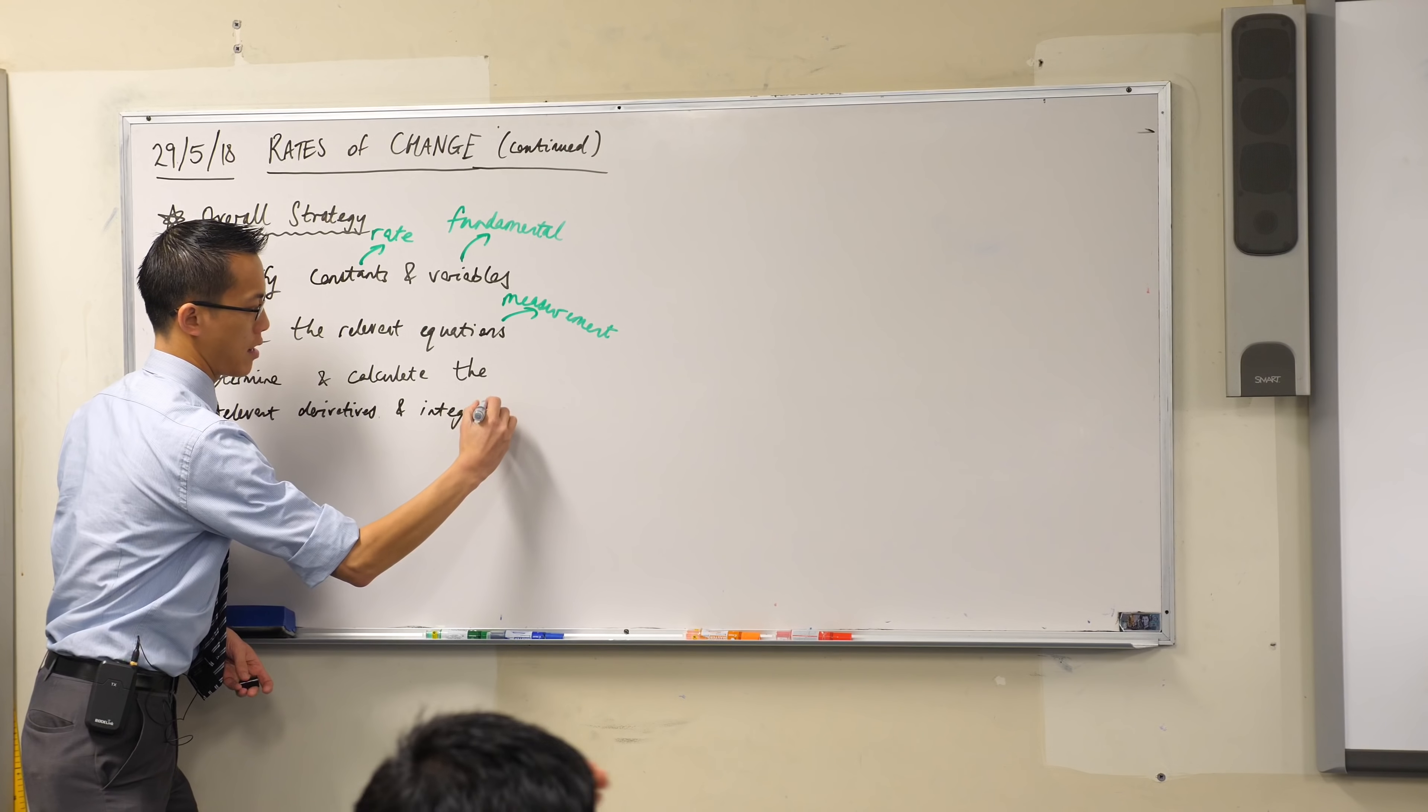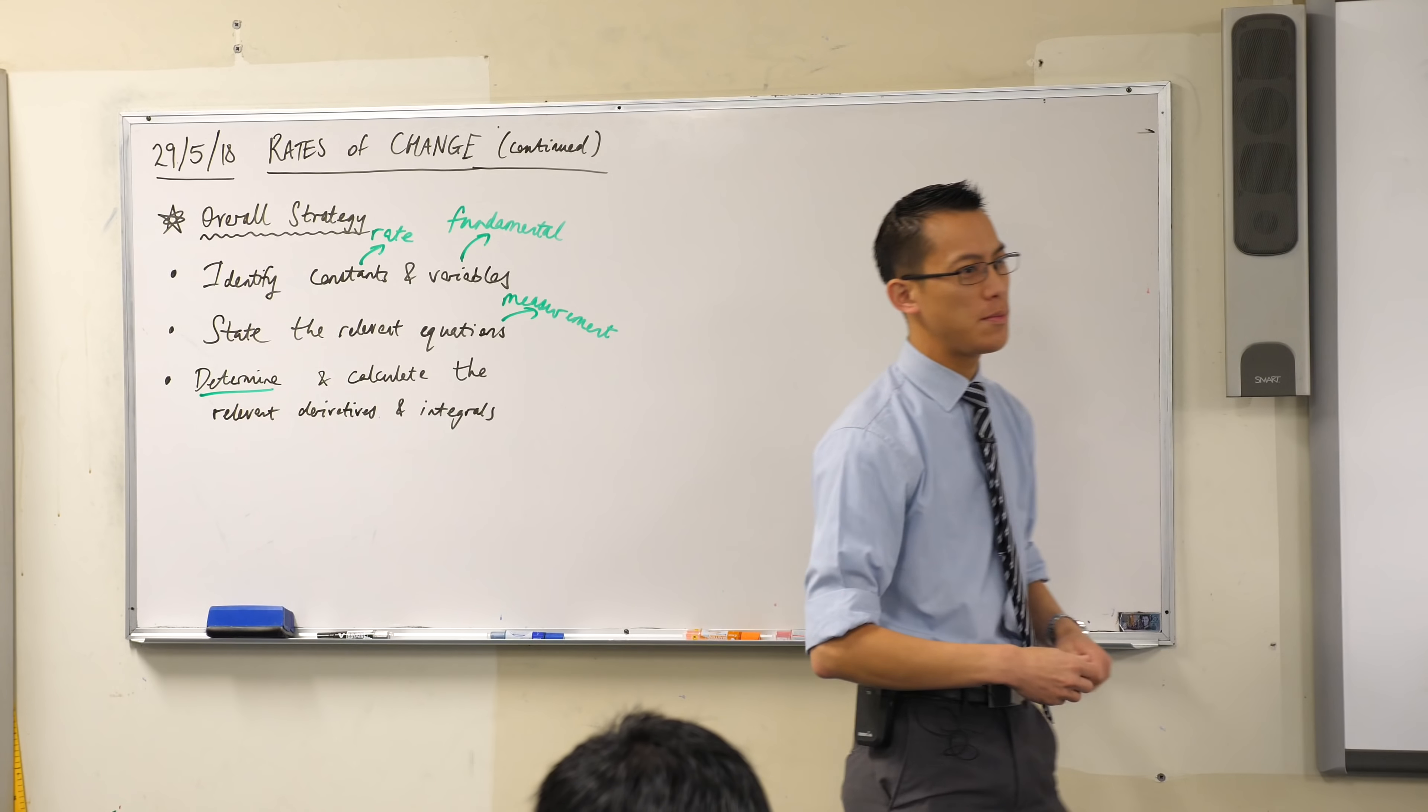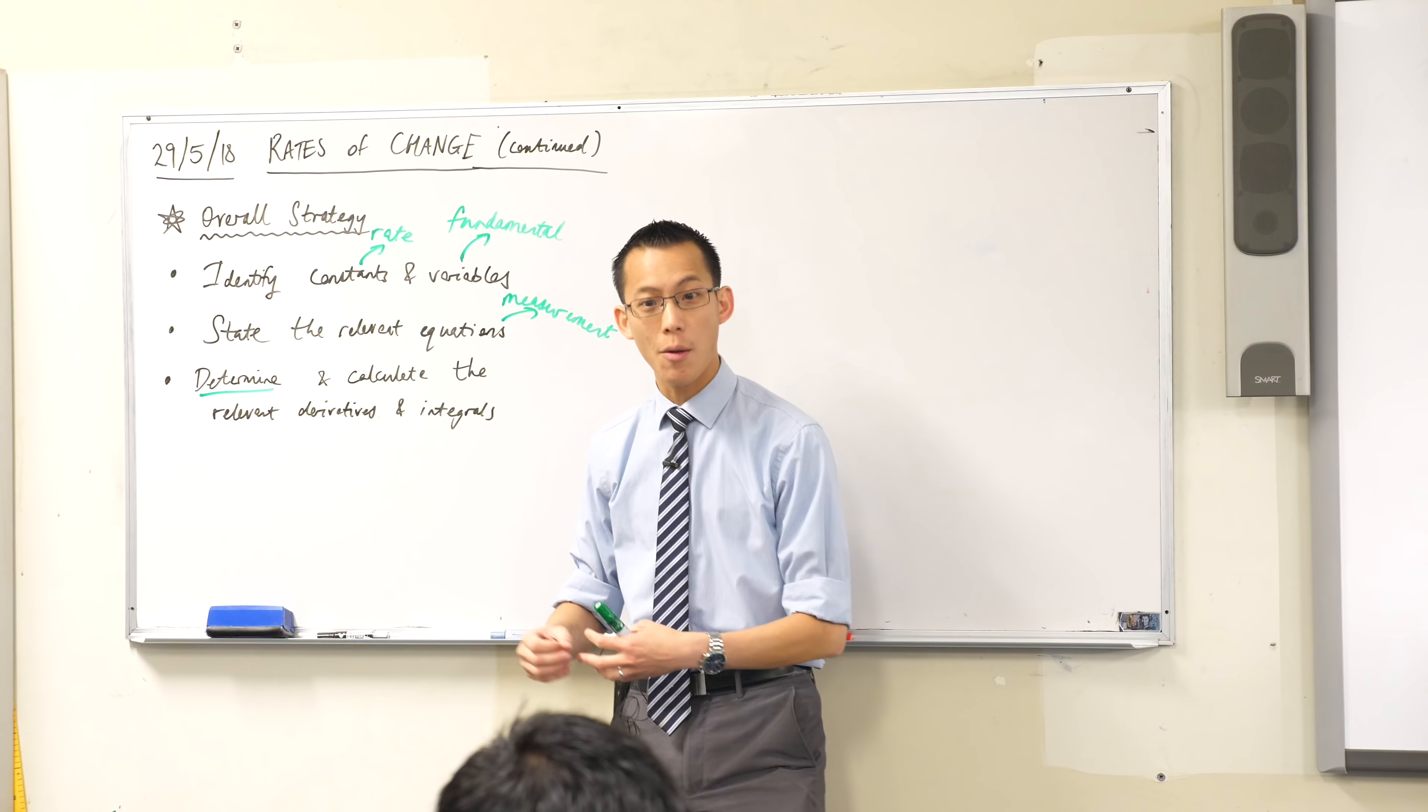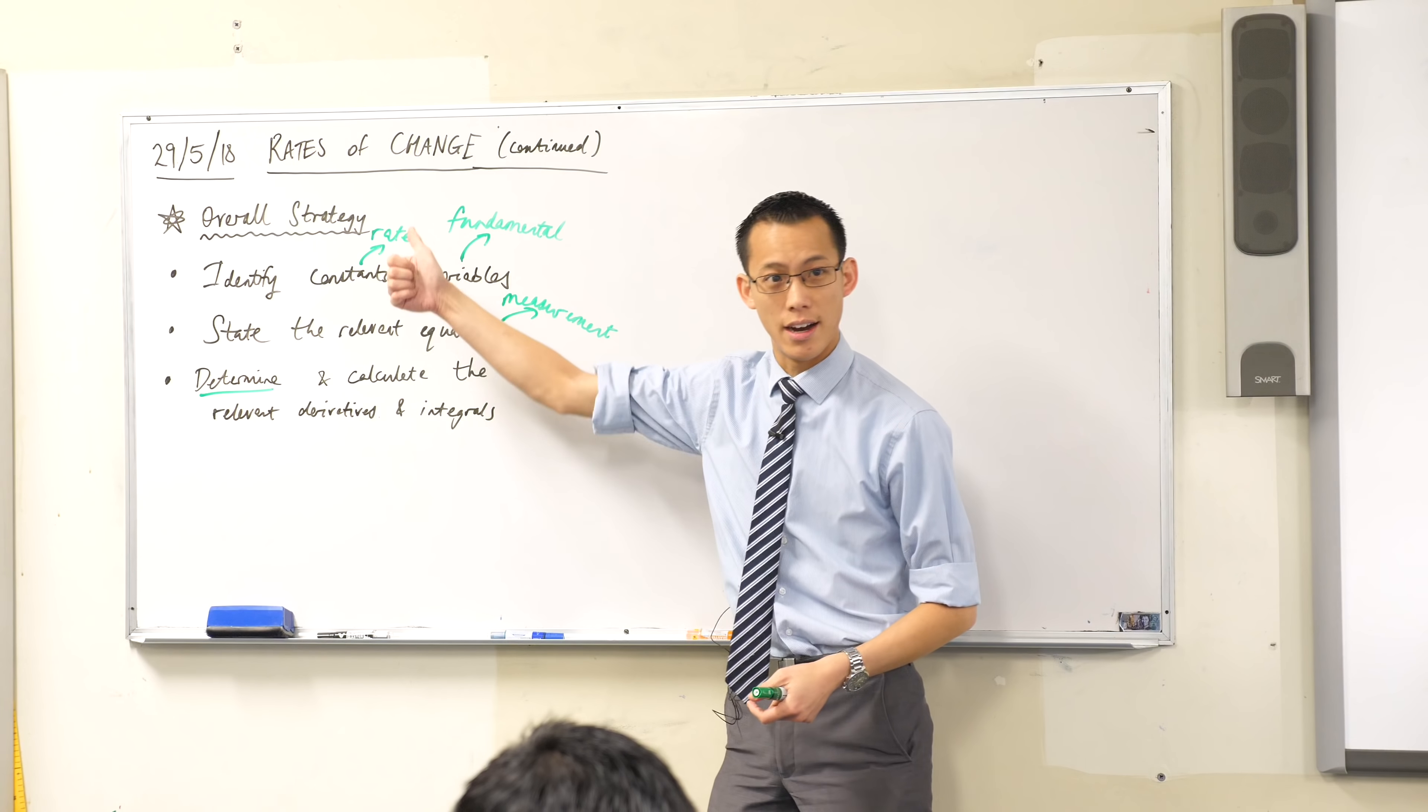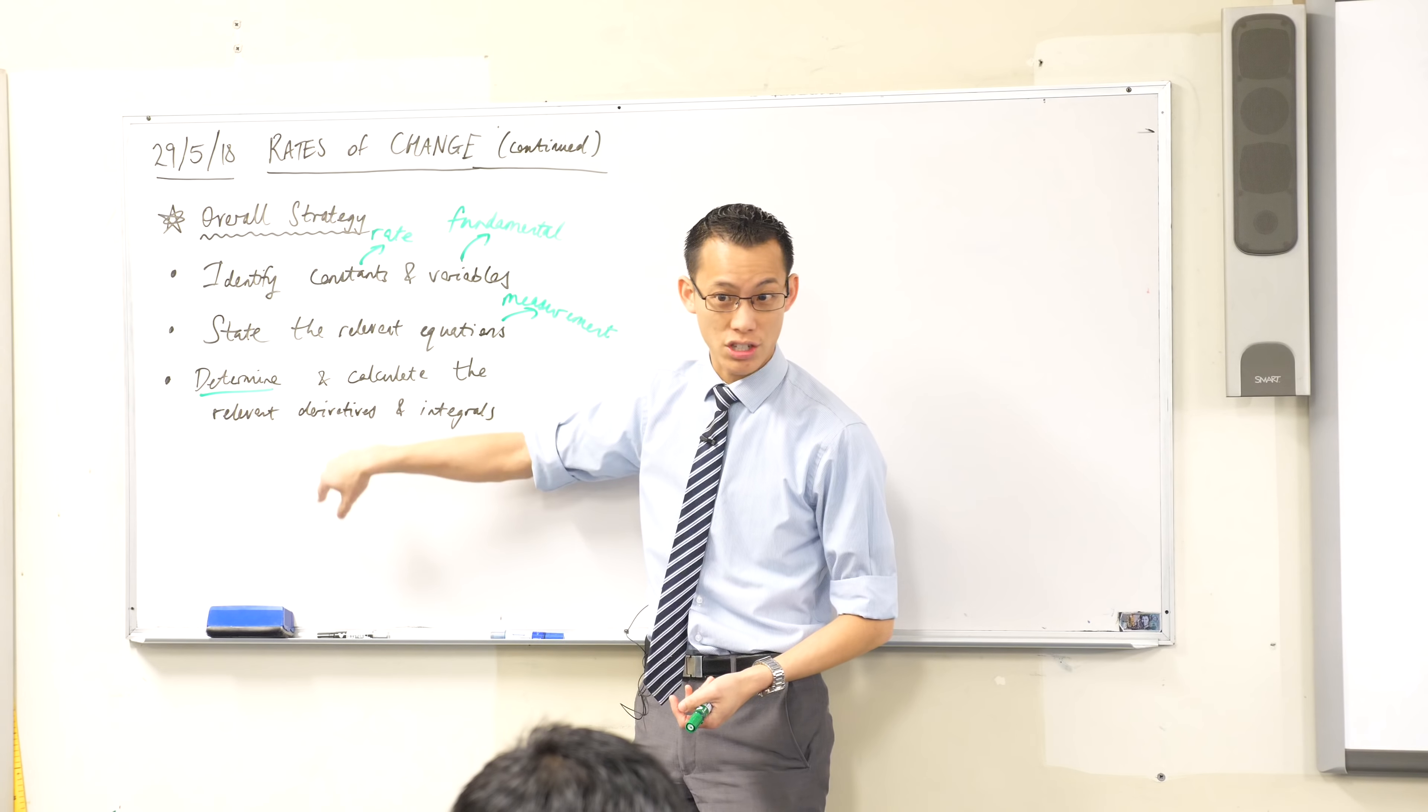And can you put in an underline as well underneath the word determine? Because we know how to calculate derivatives. We know how to use the rules. But it's just as important to be able to say, oh, okay, I'm after dr/dt. That's the thing I'm after. What are the other derivatives that will help me get to dr/dt? I might have to know dv/dt. That might be provided earlier. And then I have to get from dv/dt to dr/dt. How am I going to do that? And you're going to have to determine what other derivatives you actually need.